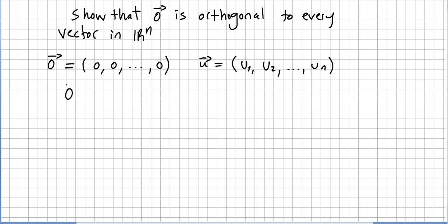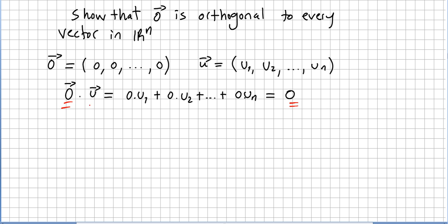What is the inner product of zero vector with u? That will be zero times u1, plus zero times u2, all the way to zero times un. And that will be zero plus zero plus zero, which equals zero. So since the inner product of the zero vector with any arbitrary vector in R^n is zero, the zero vector is orthogonal to every vector in R^n. That concludes the proof.